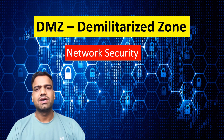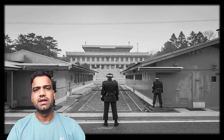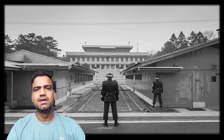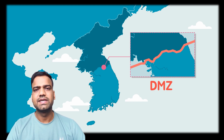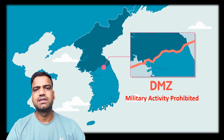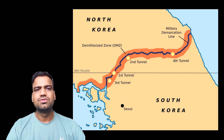Demilitarized Zones are a vital concept in the military as well. It is a buffer area between two opposing forces which separates conflicting nations or entities, with the primary objective to provide a neutral space where military activities are restricted or prohibited. Like the Korean Demilitarized Zone, which was established to serve as a buffer zone between North Korea and South Korea.